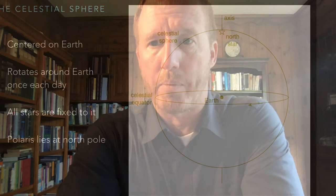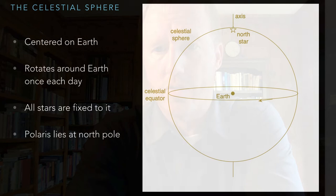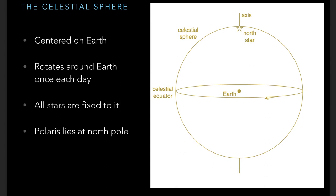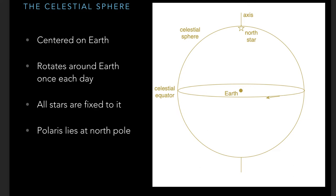Now let's look at the mechanism for this rotation. The celestial sphere, which I've drawn here, is an enormous sphere with the earth at the center. There is an axis running through it about which it rotates on a day-to-day basis. All the stars are fixed to the celestial sphere and rotate in the direction shown, so that the stars rise in the east and set in the west. The north star, Polaris, is on the north pole of this celestial sphere.